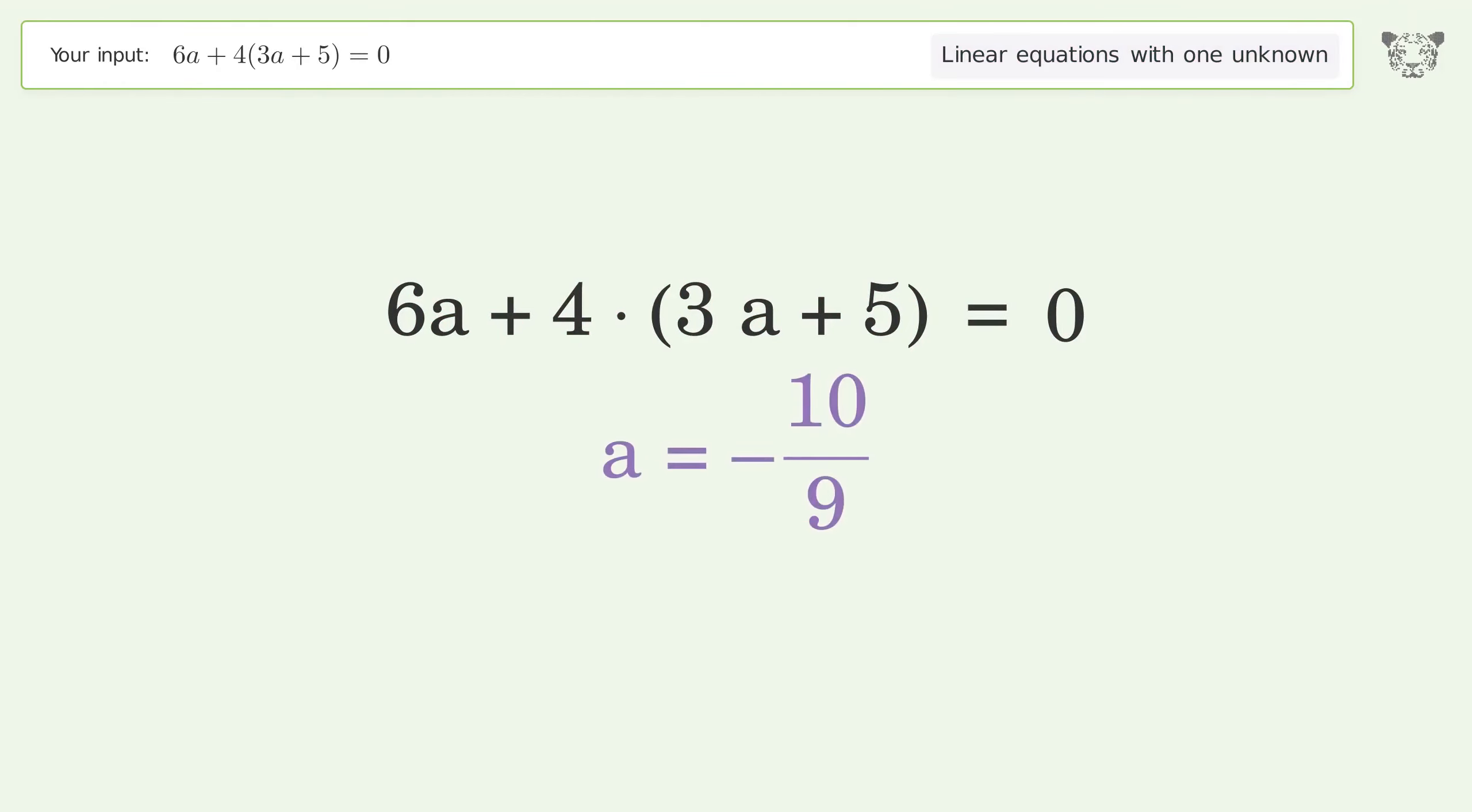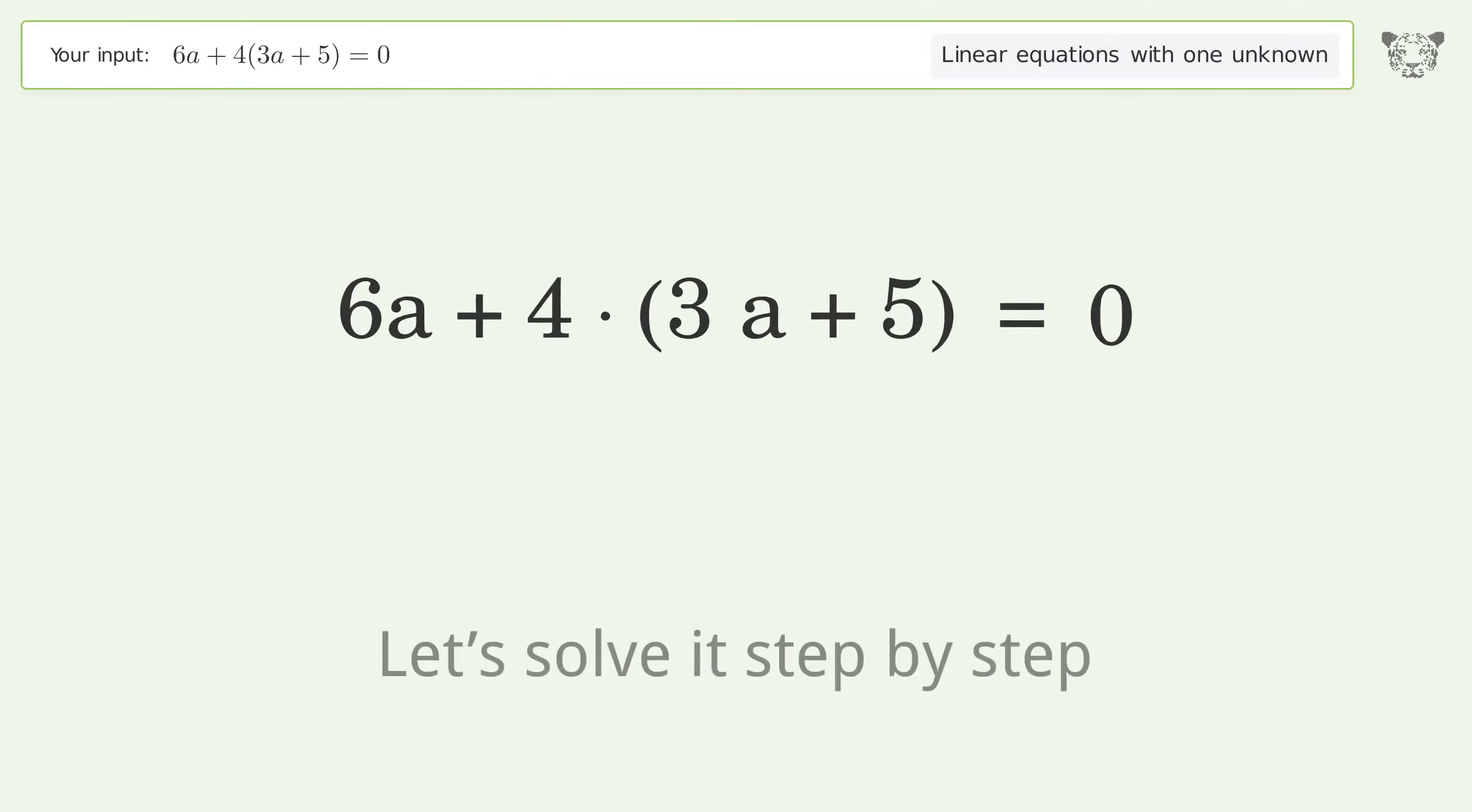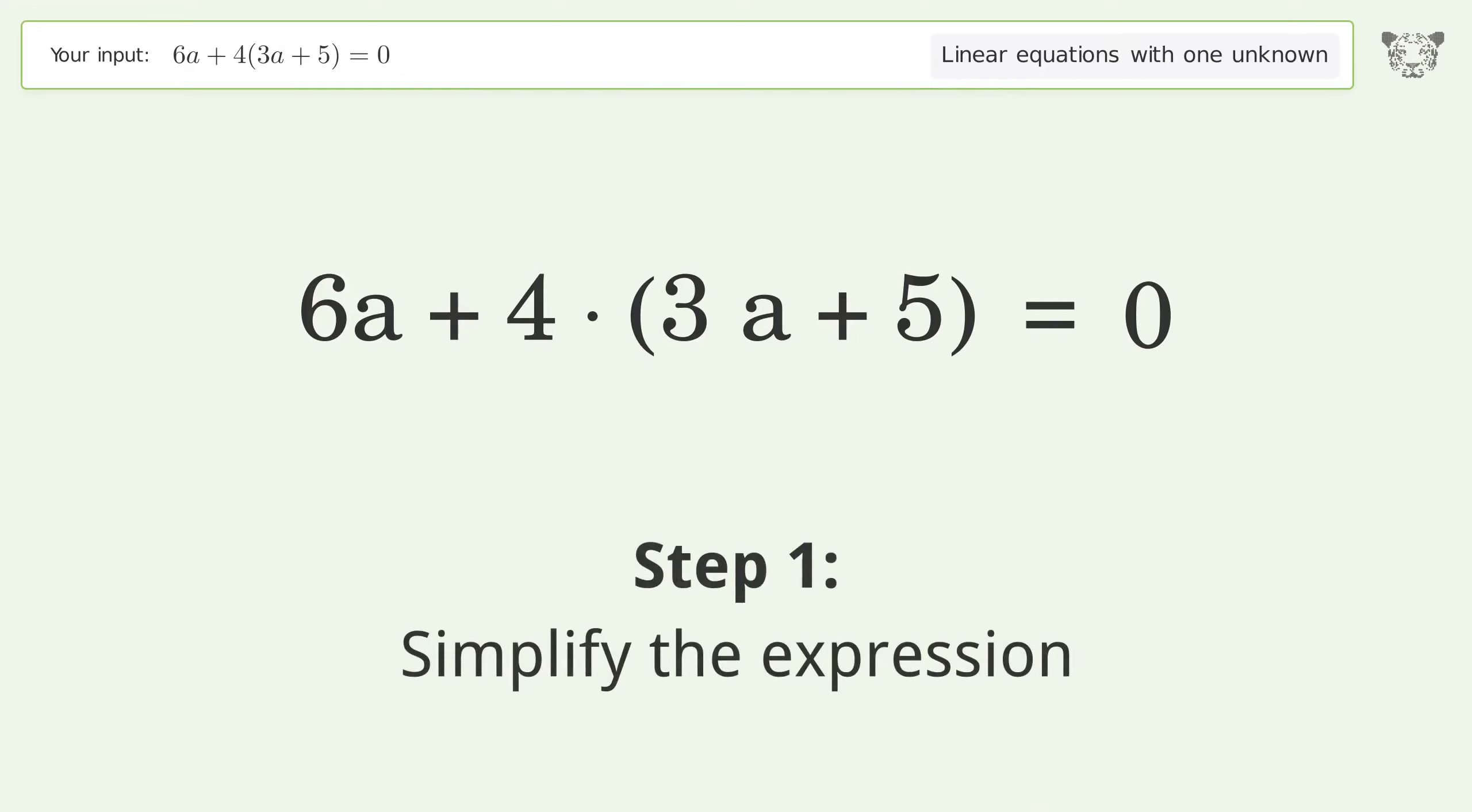You asked Tiger to solve this, which deals with linear equations with one unknown. The final result is a equals negative 10 over 9.